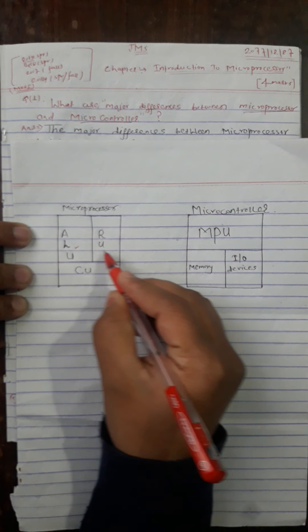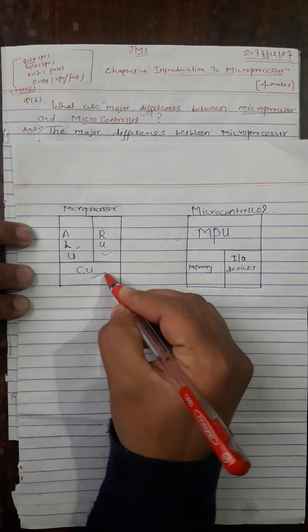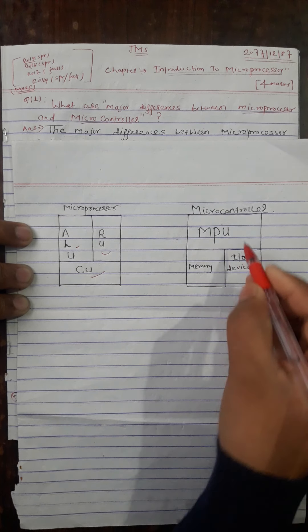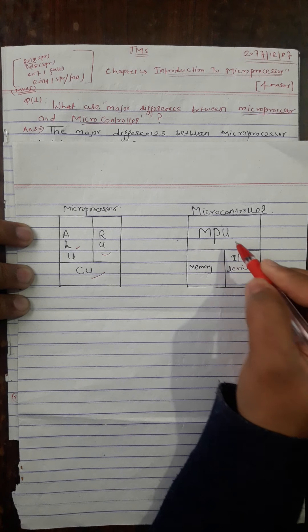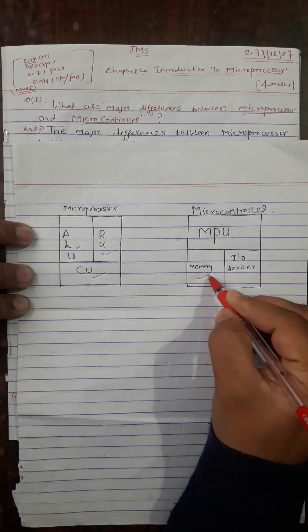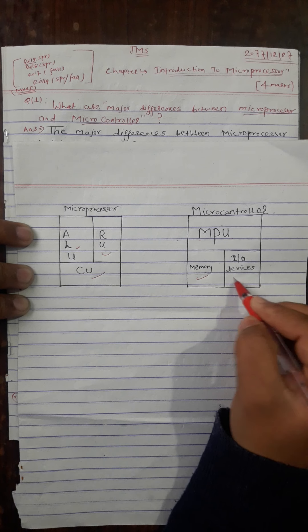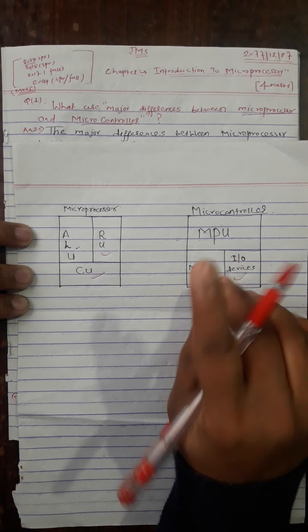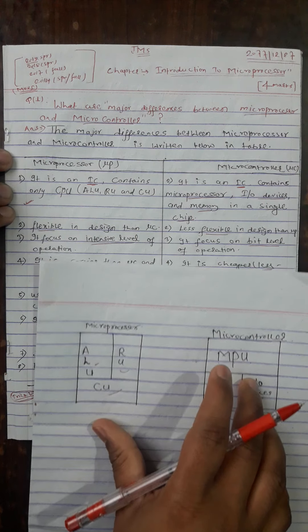This figure shows the components: microprocessor includes ALU, register unit, and control unit. A microcontroller includes a microprocessor unit and an input-output devices unit all integrated together.